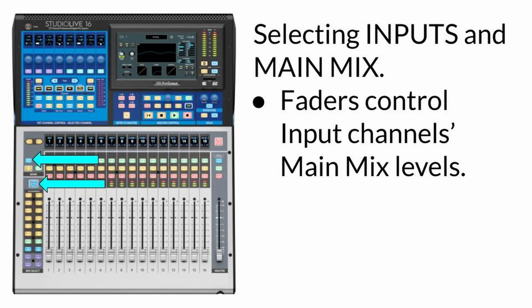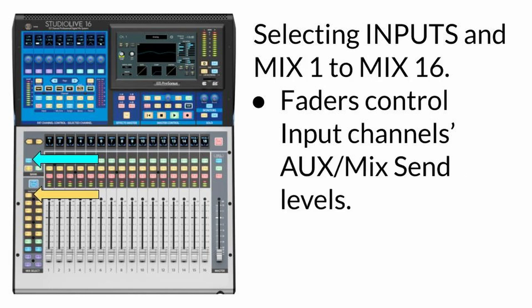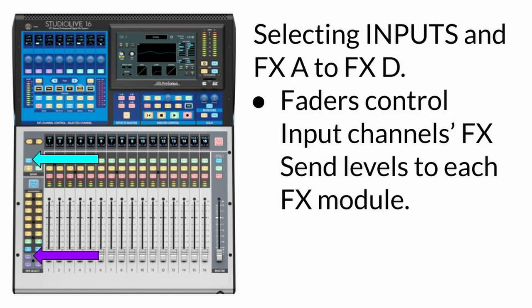This is very similar to the analog mixing desk. By selecting the inputs in the bank section and Mix 1 in the mix select section, the faders are assigned to each channel's auxiliary mix send levels — the faders now determine the amount of signal from that channel being sent to that auxiliary bus. Selecting the inputs from the bank and the FX module from the mix selection, faders are now assigned to each input channel's FX send level to each FX module, allowing you to use the faders to control the amount of signal sent to each FX module.